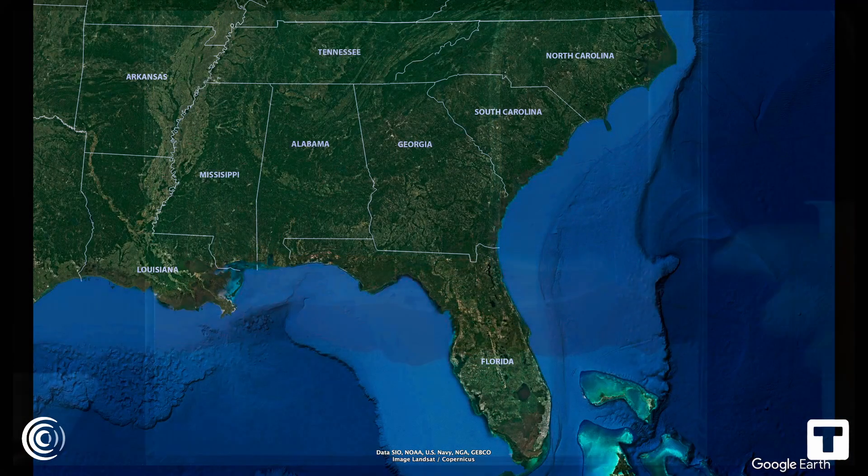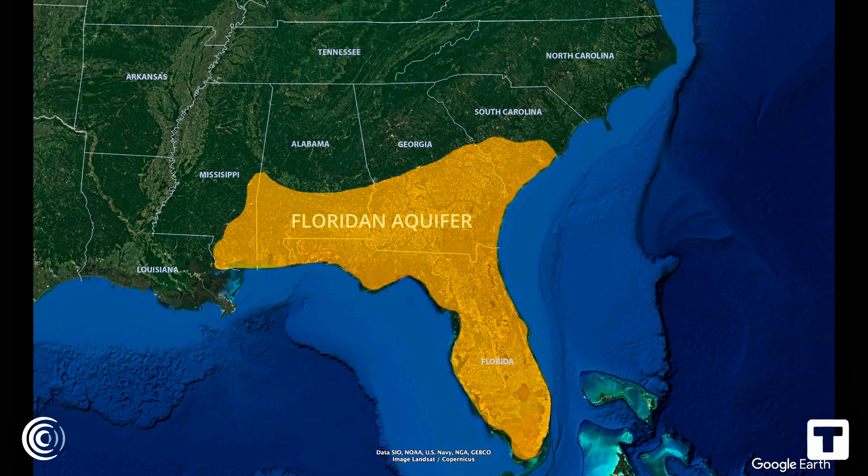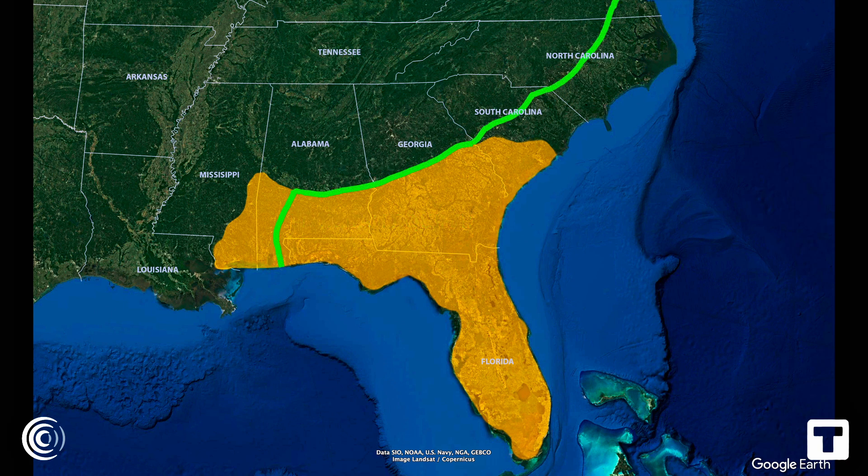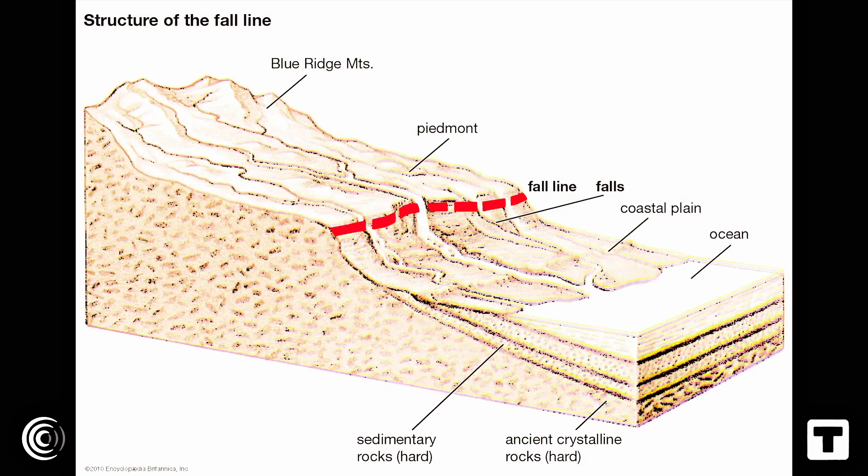The confined aquifer is not charged by rainfall like the top layer. Instead, the Floridan aquifer is recharged along the fall line. That's an area across middle Georgia, roughly across Columbus, Macon, Milledgeville, and Augusta where the limestone of the aquifer rises to the surface. Remember I said the aquifer was in a basin. Well, the fall line marks the prehistoric shoreline of the Atlantic Ocean.